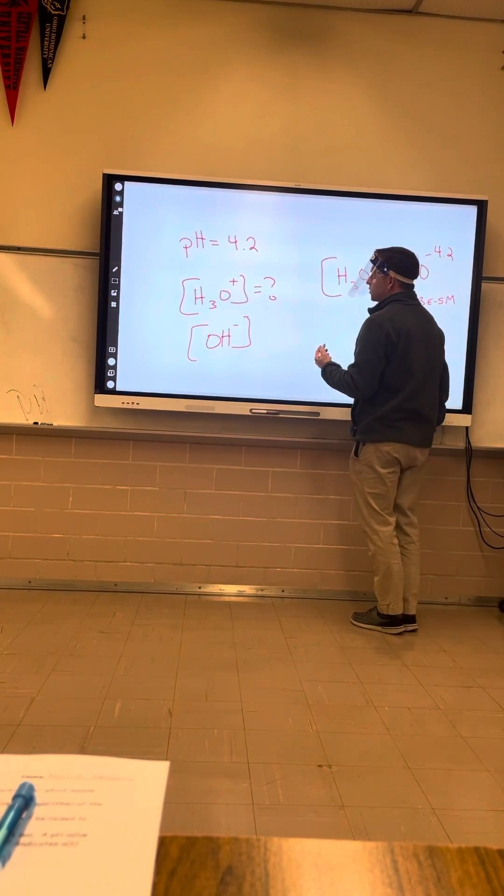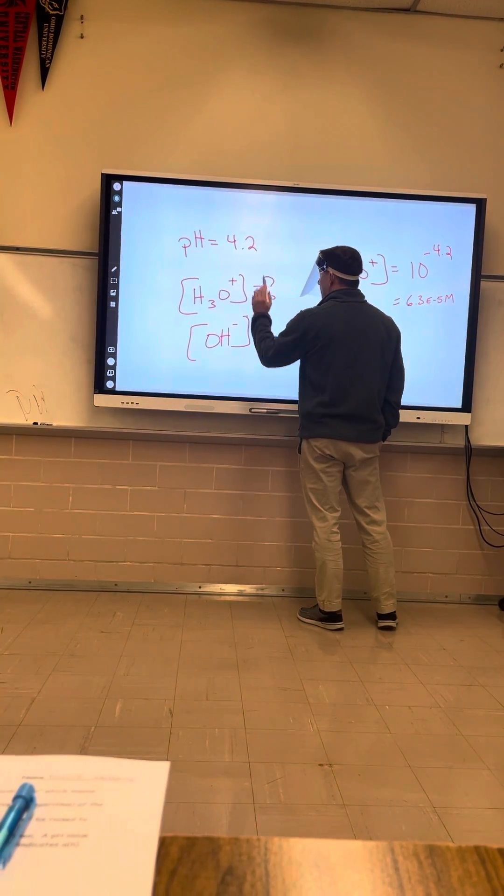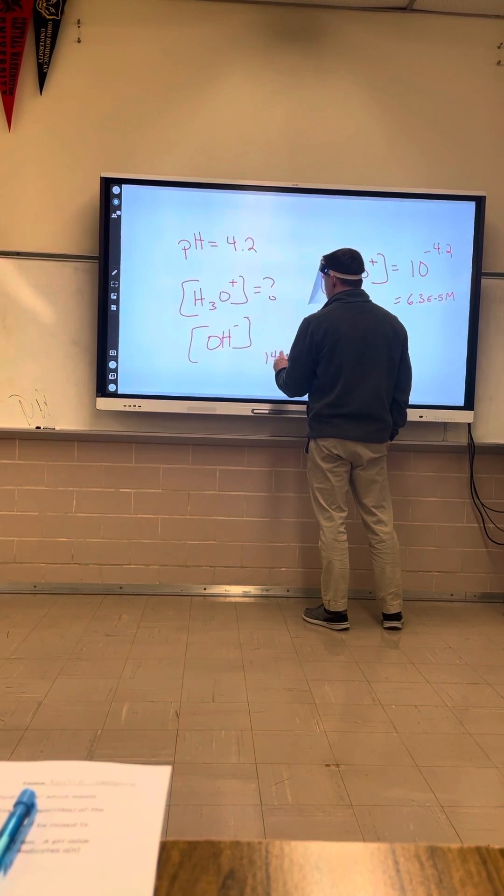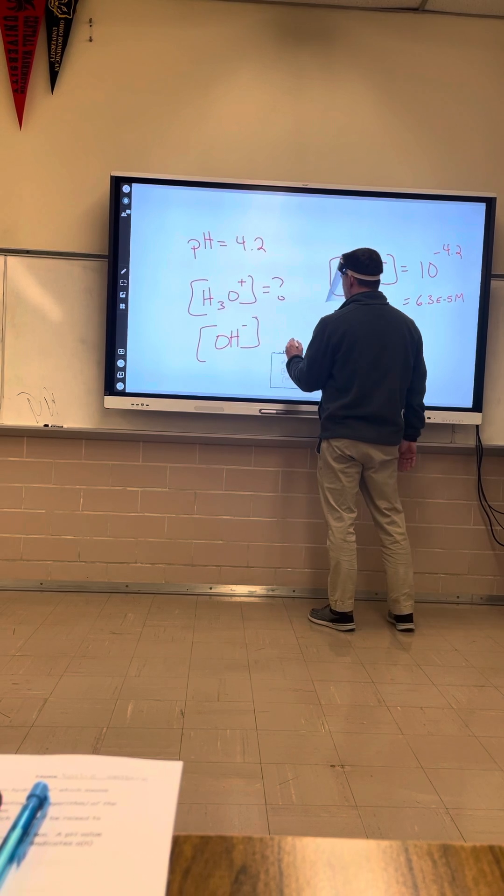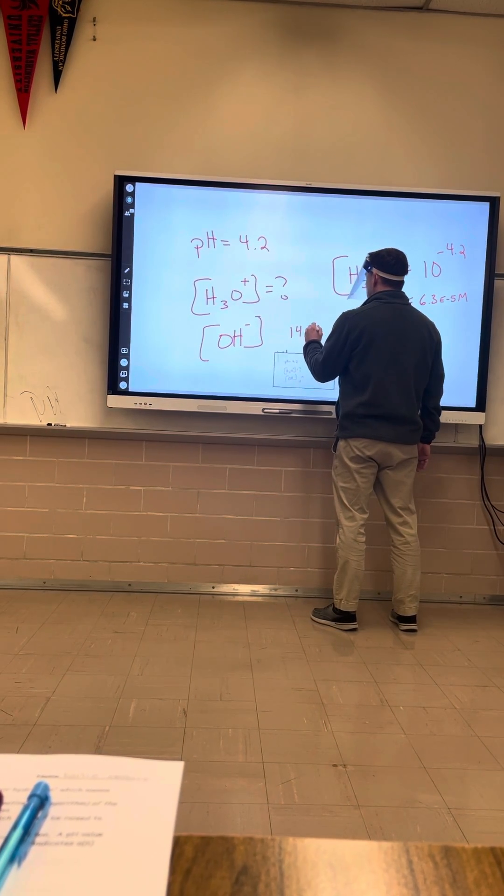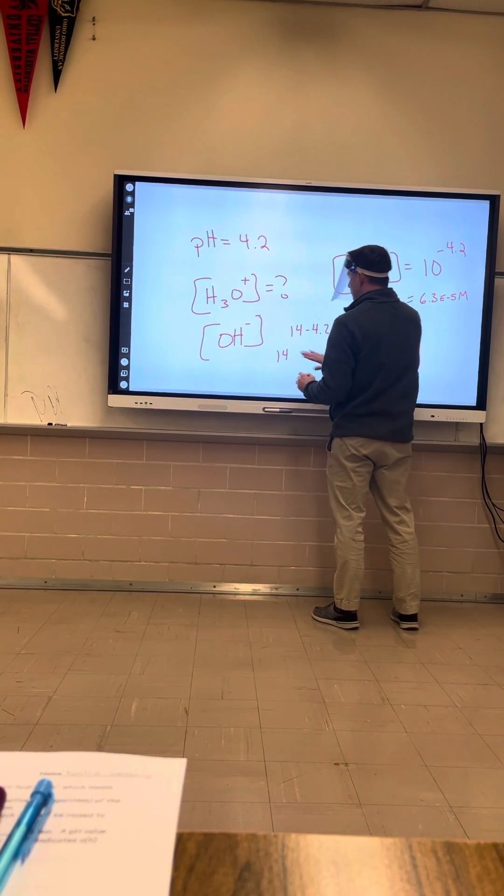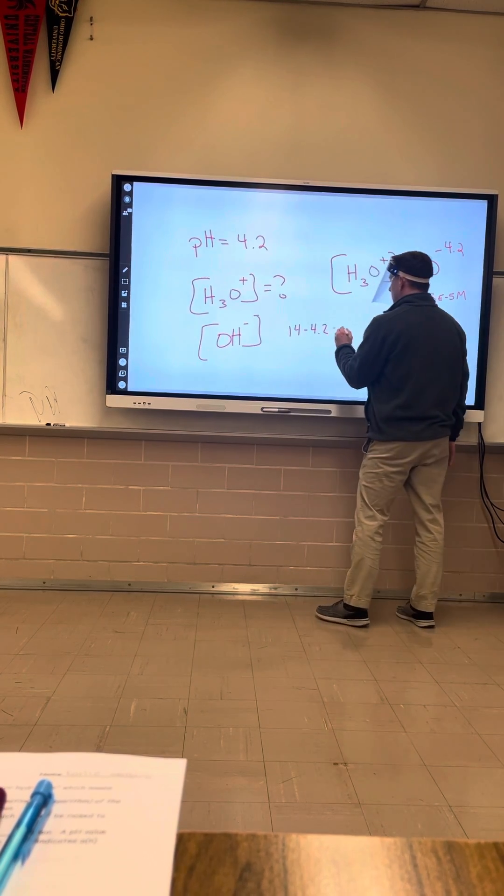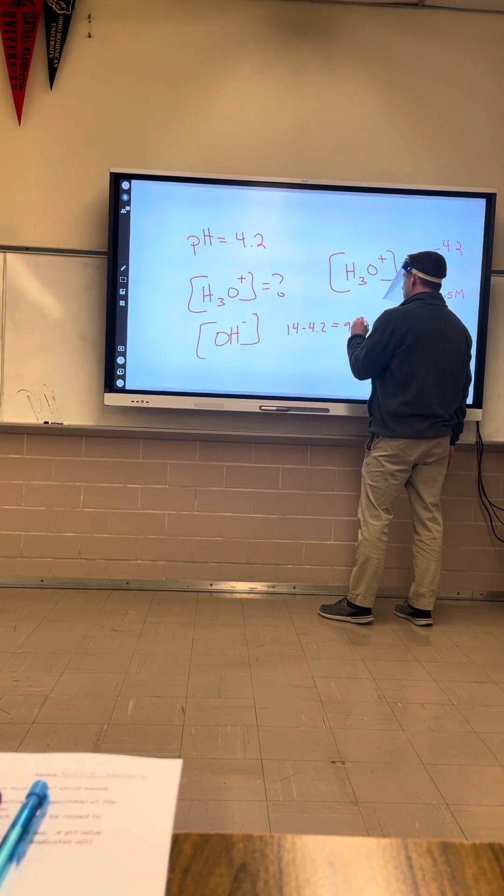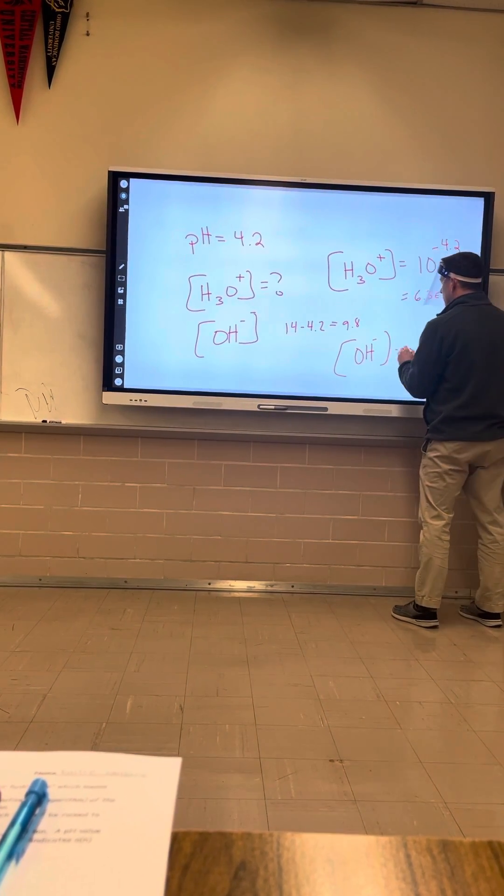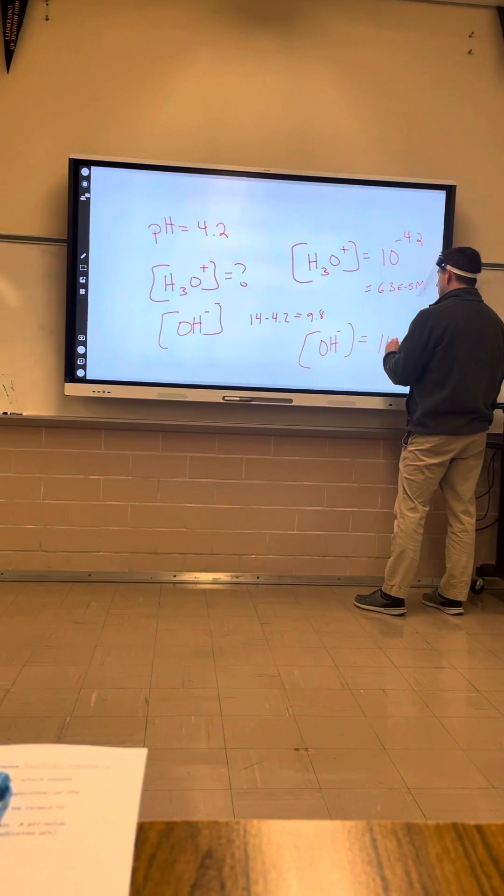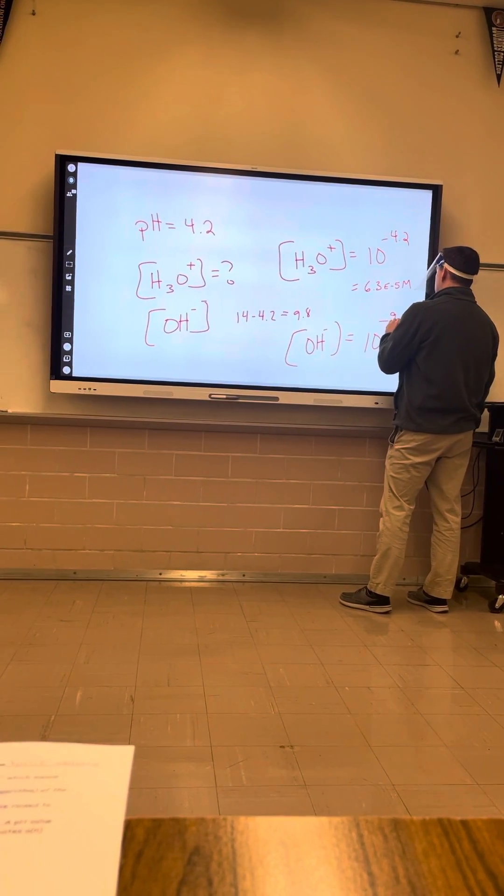Now to find the POH, the OH-, we'll first take 14, take 14 minus 4.2, and I think that's going to be 9.8. So the OH- will equal 10 to the negative 9.8.